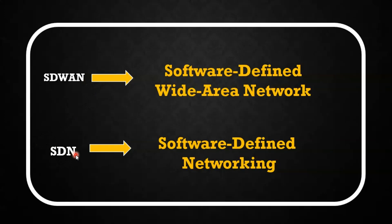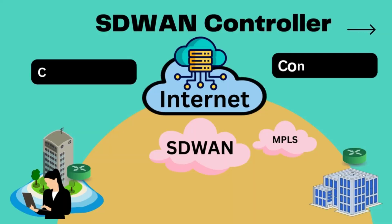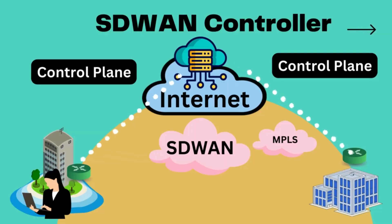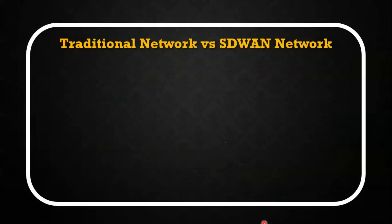SDN is more focused on internal networking optimization within the data center and enterprise network. In traditional networking, the infrastructure devices have the data and control plane working on the same device. But in an SDN solution, the data plane works on the device while the control plane is managed from a centralized controller, not on the device itself.